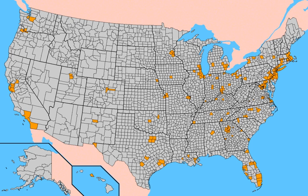The 23rd Amendment grants electors to D.C. as if it were a state, but not more than the least populous state — this has always been three. Maine's four electors and Nebraska's five are distributed using the Congressional District method.